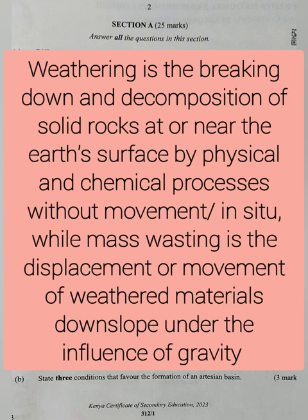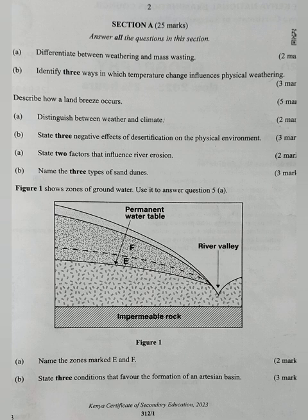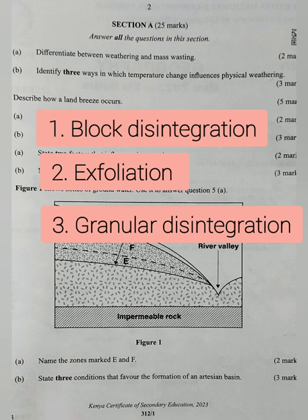Question 1B: identify three ways in which temperature changes influence physical weathering. Changes in atmospheric temperatures are responsible for physical weathering processes, and mainly there are three: block disintegration, exfoliation, and granular disintegration.